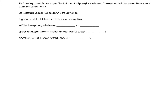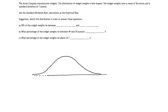To use the empirical rule, I first like to get a picture of what's going on, so I'm going to draw my bell-shaped curve. We've got our normal distribution curve, and what do we know about it? We know what the mean is. My mean is 56 ounces, so I'm going to put 56 ounces right in the middle of this curve, with symmetry on both sides.